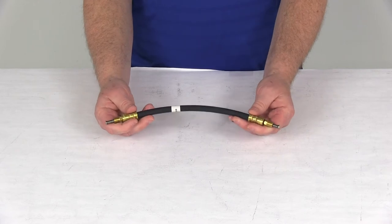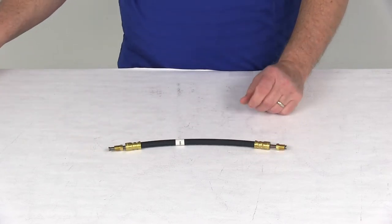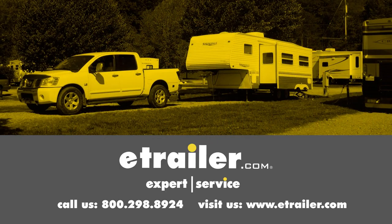But that should do it for the review on the Kodiak 12-inch long flexible hydraulic brake hose. Click the link below to shop, learn more, or visit us at eTrailer.com.